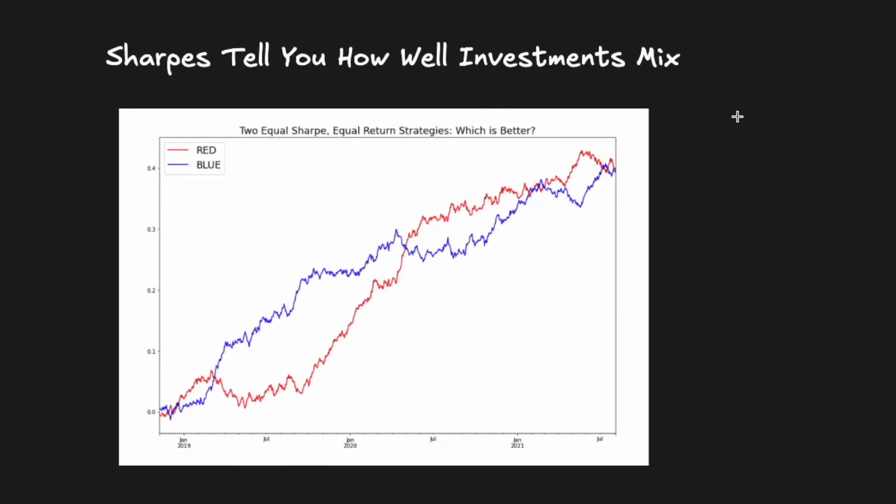So we've seen that Sharpes are useful for evaluating standalone investments. However, just as importantly, they let you evaluate combinations of investments. Here's a quick stylized example to illustrate this point. Red and blue here are both equal Sharpe investments - they both have a Sharpe ratio of 2.0. They also have the same volatility and return. So which of these should we go with? Maybe we're indifferent since they have the same return and Sharpe, so we'll just flip a coin: heads go with red and tails with blue.